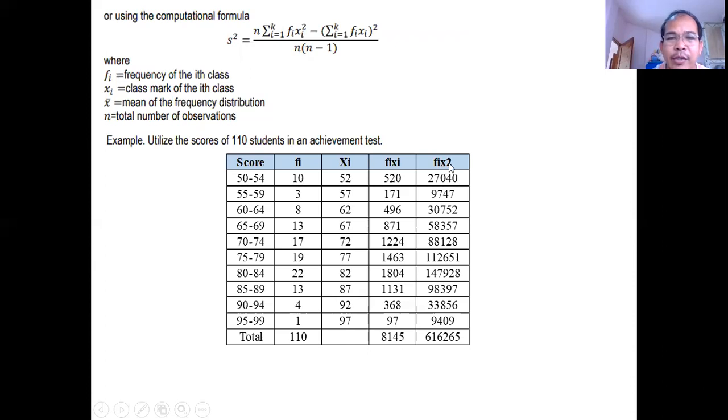This one is x squared. So you score first x then times the frequency. You have 52 squared times 10. You have 27040. 57 squared times 3, 9747. 62 squared times 8, 30752. The same process. 67 squared times 13. 72 squared times 17. 77 squared times 19. 82 squared times 22. Then i-add ito lahat.